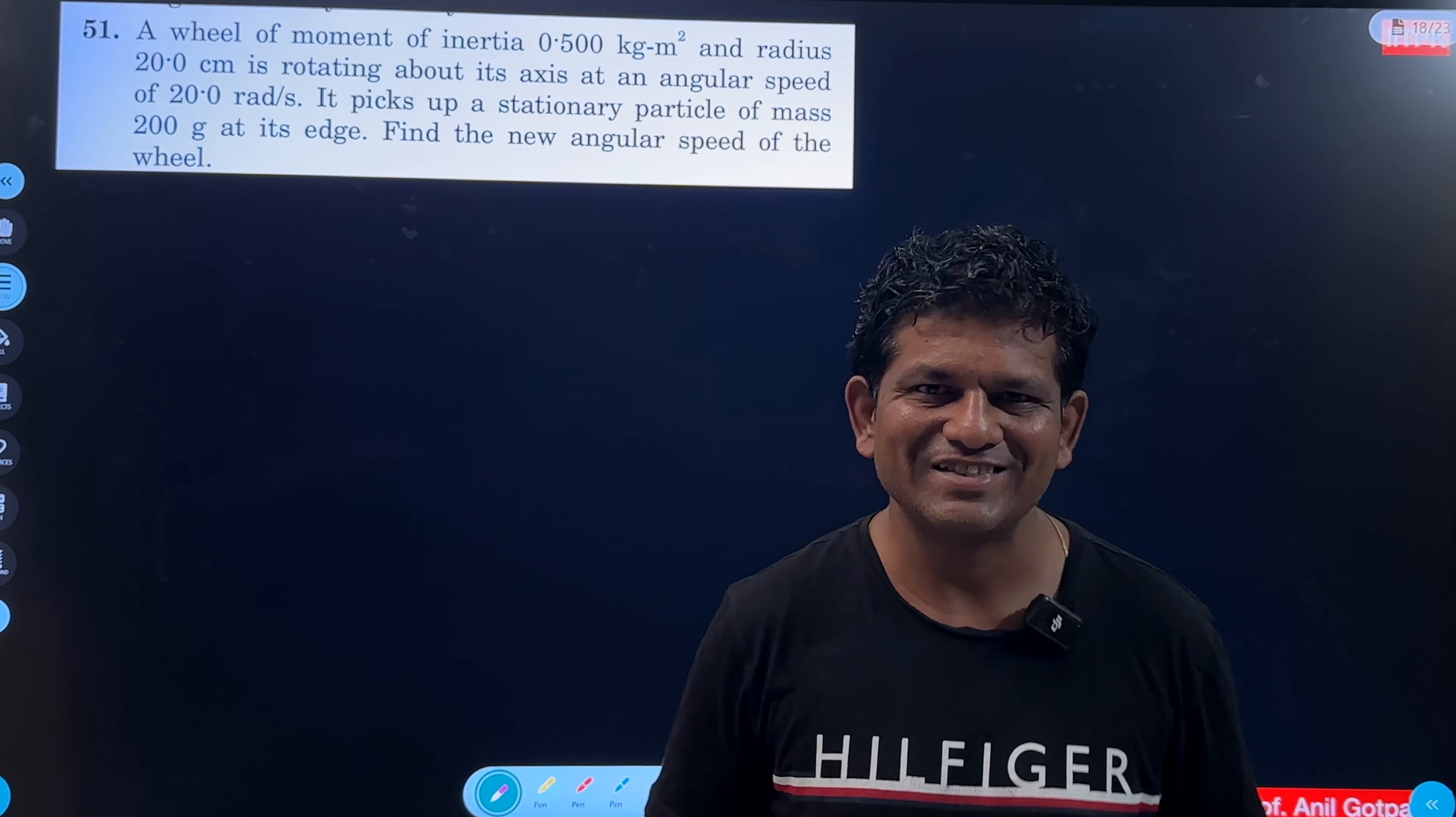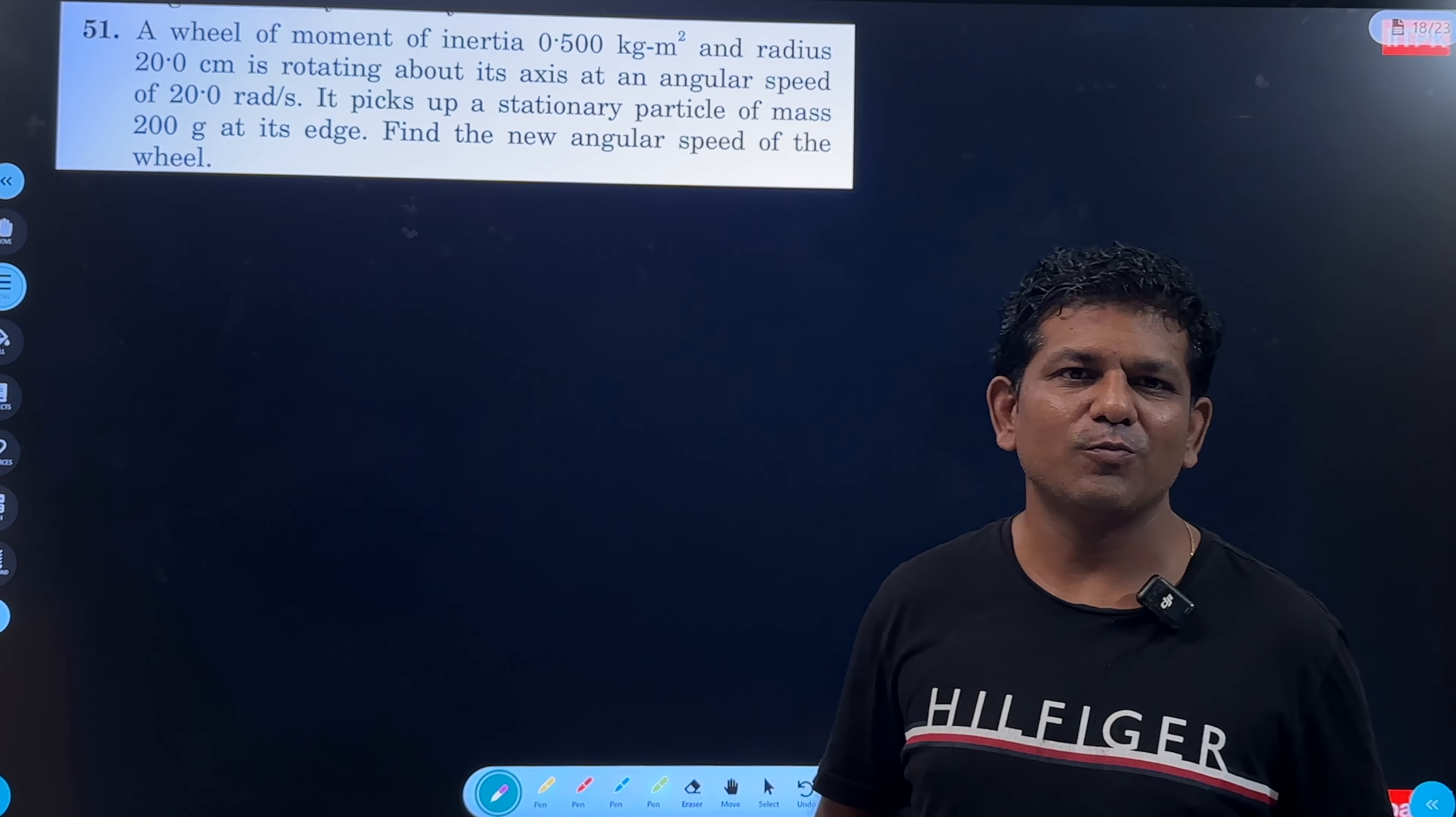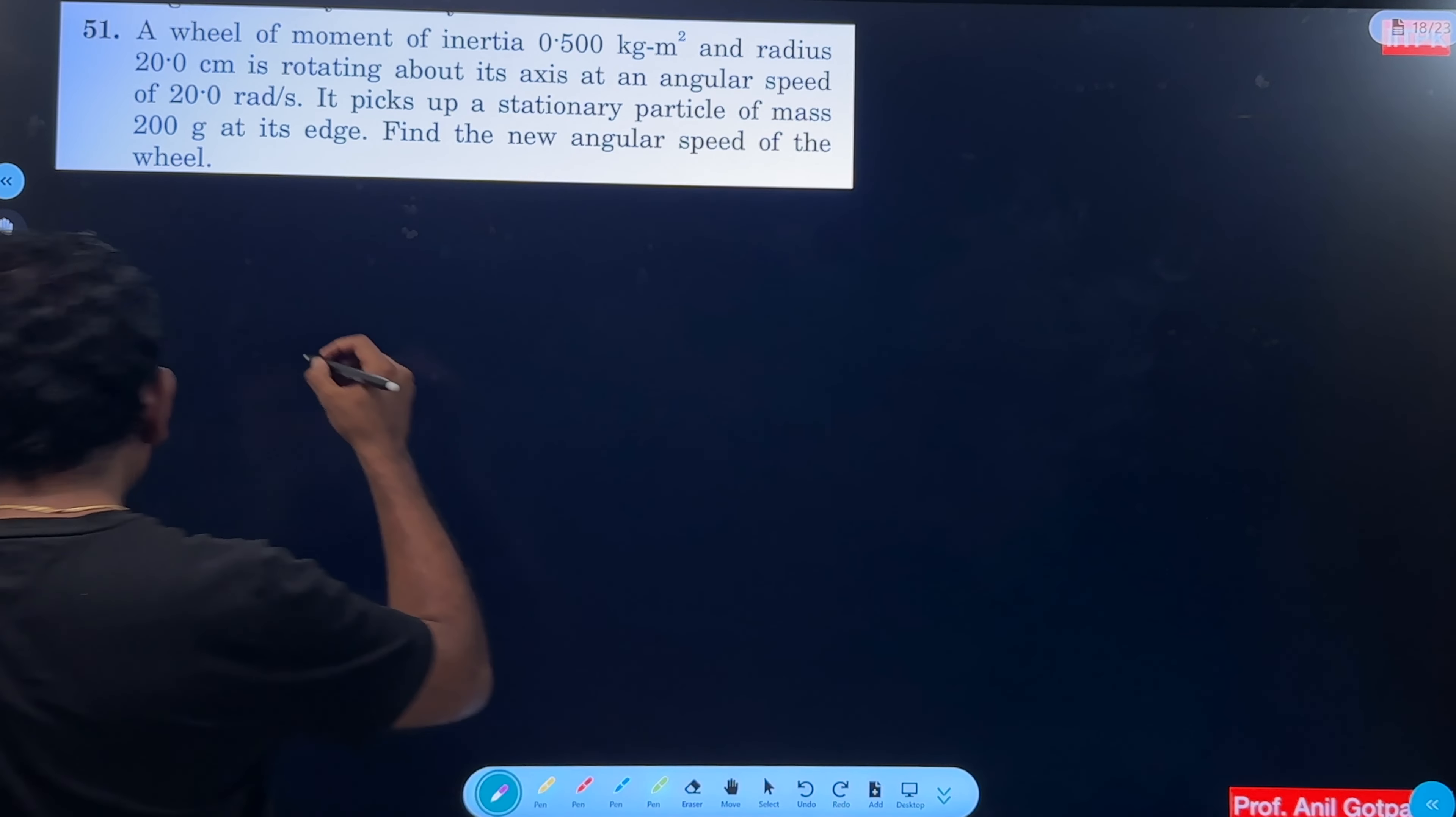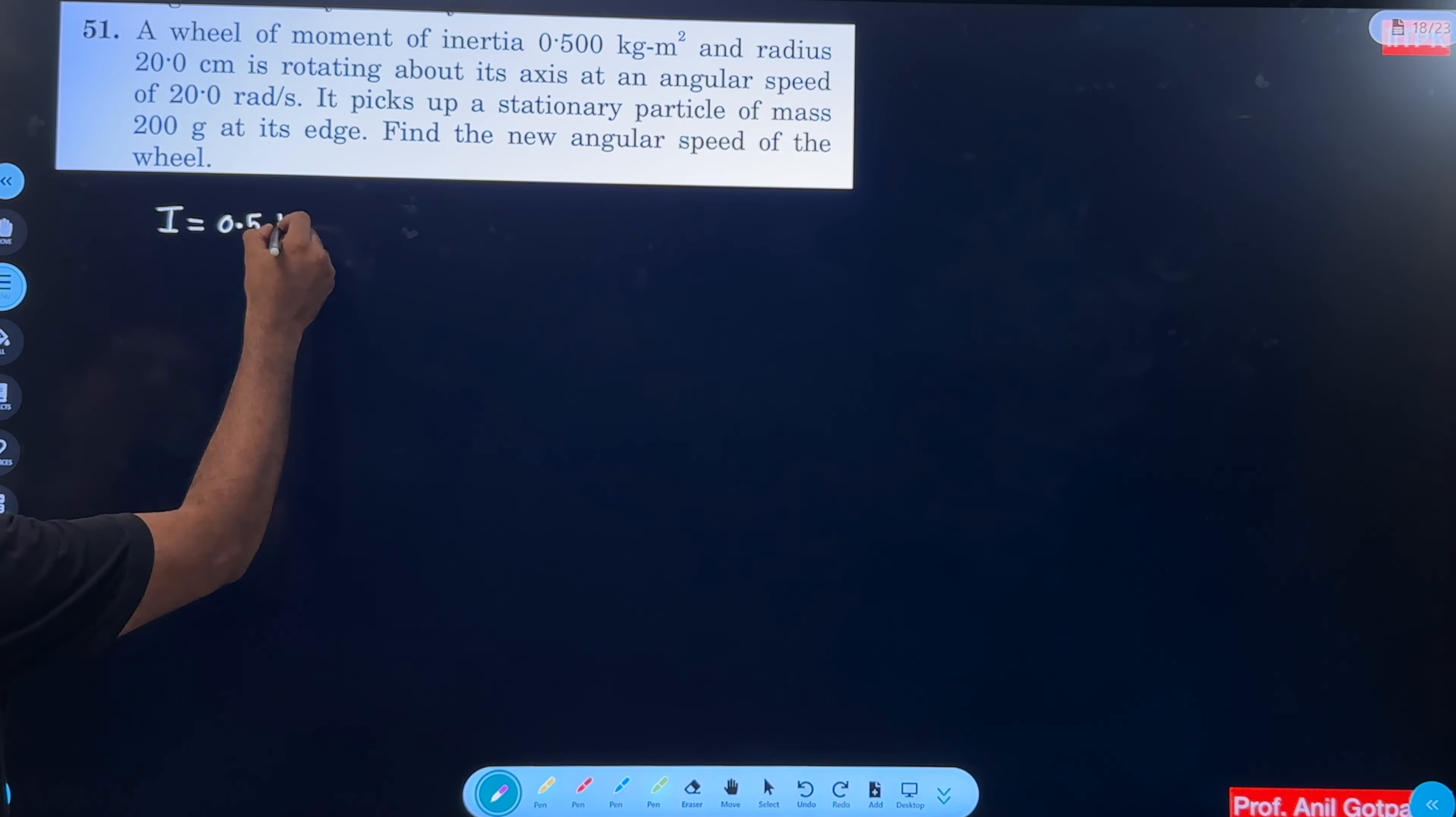Question number 51. A wheel of moment of inertia is 0.5 kg meter square. Given data we have written, moment of inertia is 0.5 kg meter square.